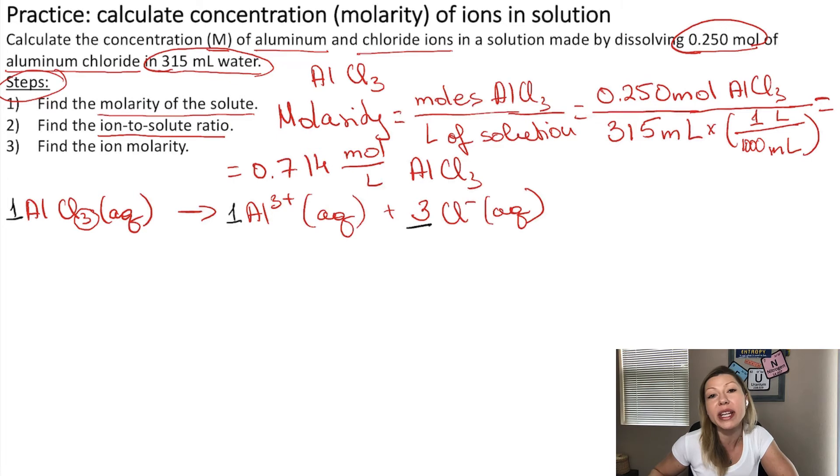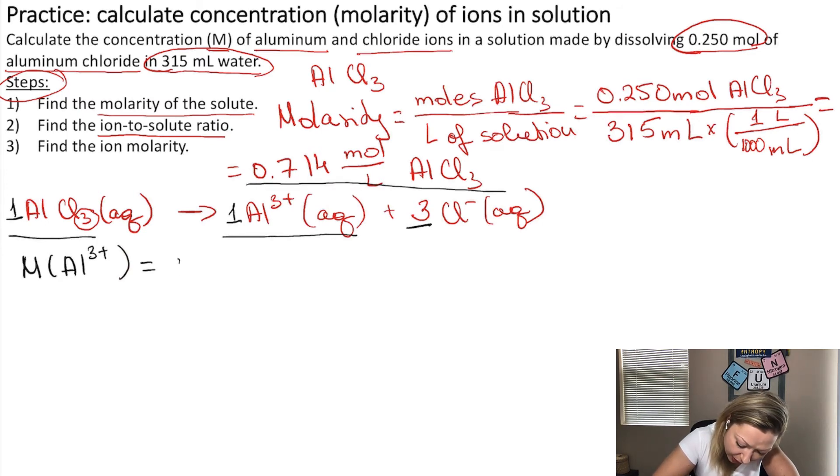So, now from here, we can find the ion molarity. Because the ratio of aluminum chloride to aluminum ions is 1 to 1, that means that I'm going to have the same concentration of aluminum ions as aluminum chloride. So, the molarity of aluminum 3 plus ions in this solution is going to be the same as the molarity of aluminum chloride, 0.714 mol per liters.